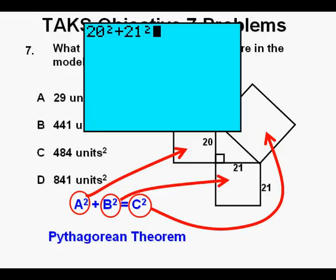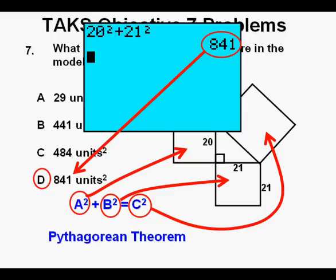So here we have 20 squared plus 21 squared for A squared plus B squared. We press enter. We get 841 square units for the area of the largest square. And we circle our correct answer, D.